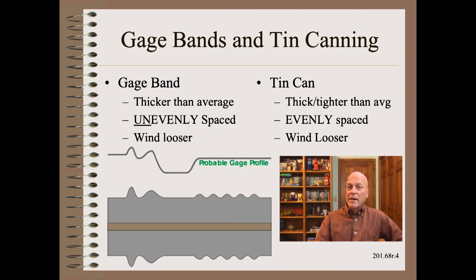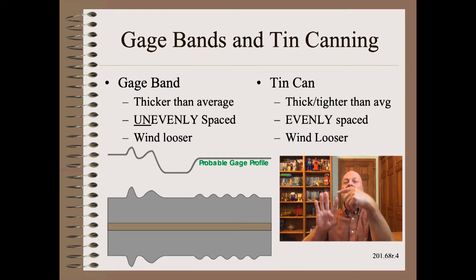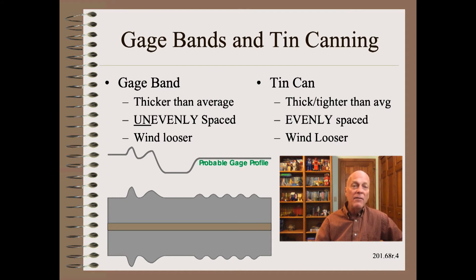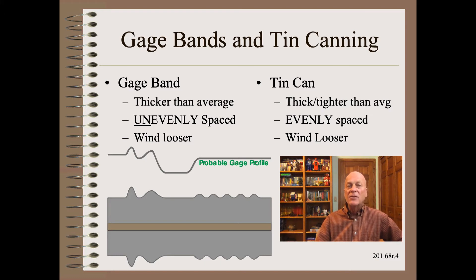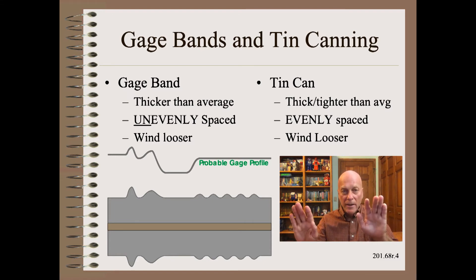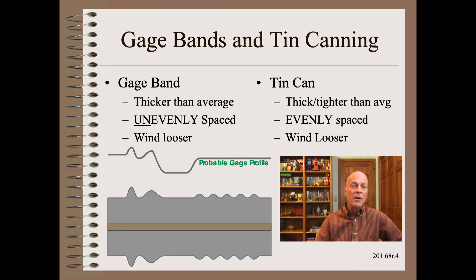One way to tell the difference between tin cans and gauge bands can be simple. Tin cans, when present, have an even spacing. Thus, while a tin can may favor a generally high gauge profile area, because that area is tighter, and tin cans are a tight defect, tin cans can form on perfectly level material. Corrugations, gauge bands, and tin cans are three totally different defects, as we learned in our Web 101 school.